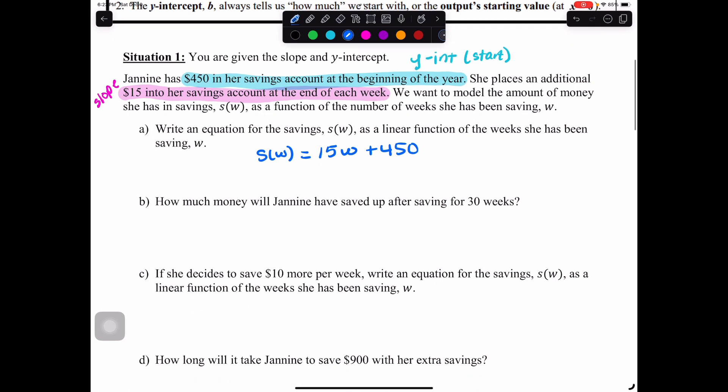Part b: how much money will Janine have saved up after saving for 30 weeks? When I see 30 weeks, that means w equals 30. Since we wrote our equation, which is why the equation is so important to write no matter what, we can use it to answer the question. We're finding s of 30, putting in an input of 30 weeks. That would be 15 times 30, we're going to replace w with 30, plus 450. So 15 times 30 is 450 plus 450 makes $900.